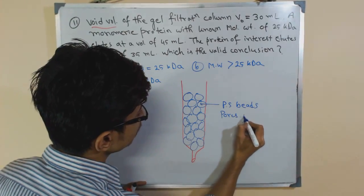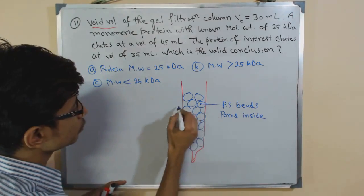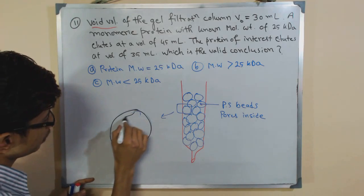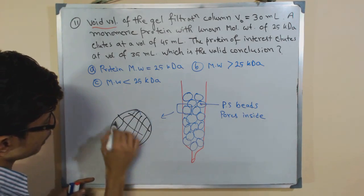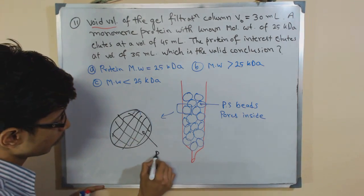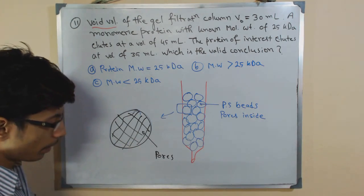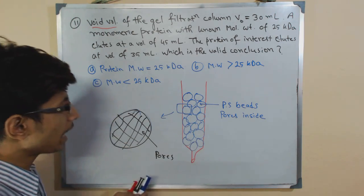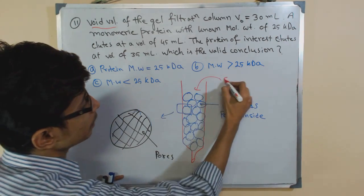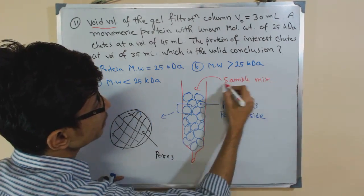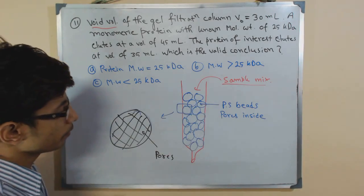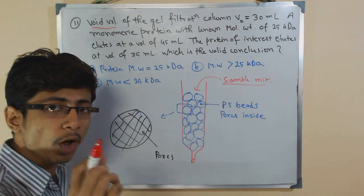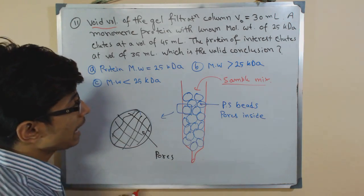If I zoom into one of these beads it will look something like this. There are mesh or network-like structures - these are the pores or networks that are present. The general principle of this size exclusion or elution chromatography is that once we add our sample mixture, suppose three or four protein mixture is there.